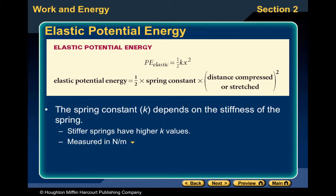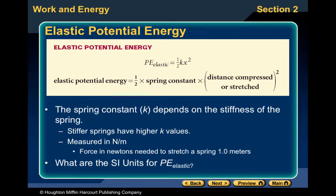Stiffer springs have higher k values. The spring constant is measured in Newtons per meter — not Newton times meter, so it's not a joule; it's Newton divided by meter — representing the force in Newtons needed to stretch a spring one meter. The SI units for PE elastic work out to kilograms times meters squared over seconds squared, or a Newton times a meter, or a joule.